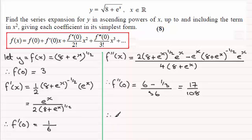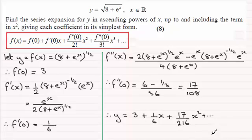So therefore, we've got y will be equal to, according to this, f of 0, which is 3, and then for the other terms, it's going to be 1 sixth x, and then plus f double dash of 0 divided by 2 factorial. If I times that by a half, then we've got plus 17 over 216, and that's x squared, and plus and so on.